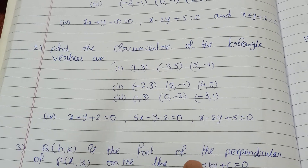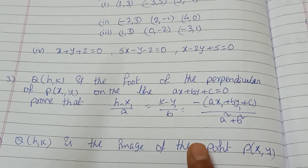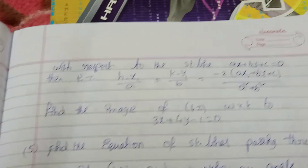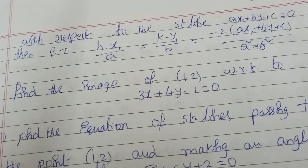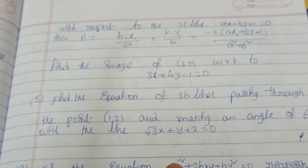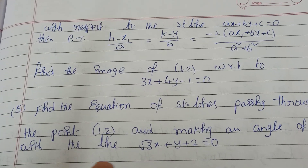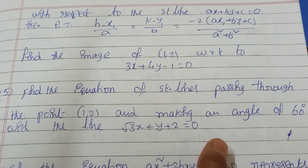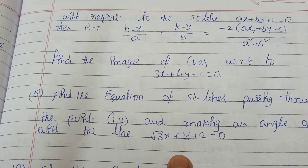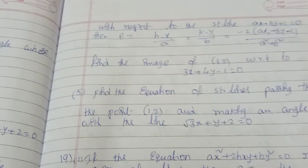We can start the problem. This is the point of the problem. Suppose I find the equation of the straight lines passing through the point (1, 2), and suppose the angle is 60 degrees. I choose this type, and the theta angle is in the equation. Now we have problems in the 18th bit.